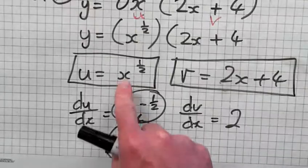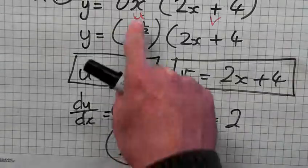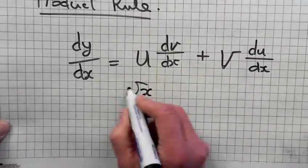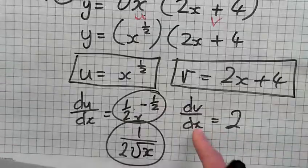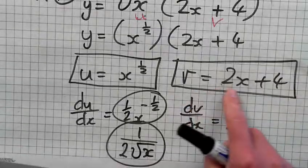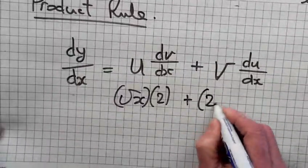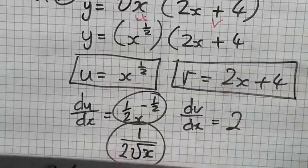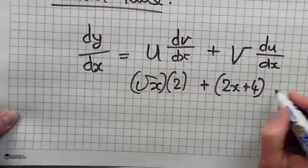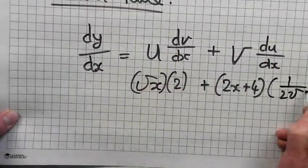Right, so u again, u again was x to the power of half, which is the square root of x. u was the square root of x, times dv dx was 2. Plus v is 2x plus 4, times du dx, 1 over 2 root of x.